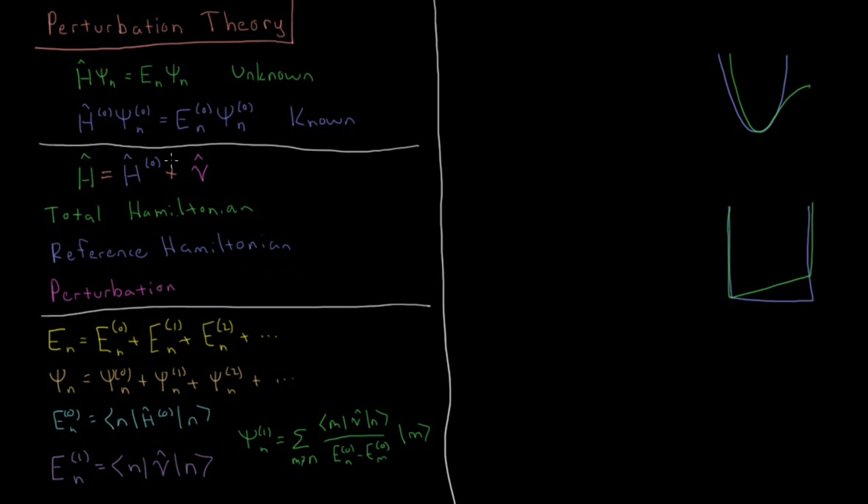But in this video, we're just focused on the basics here of what this Hamiltonian is and what the reference is and what the perturbation is. So let's look at a couple example systems here. Let's look at this for the anharmonic oscillator, which I've got over here, and for the particle in a slanted box, which we looked at in the previous video using the linear variational method.